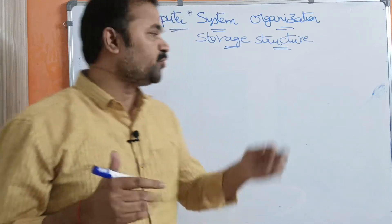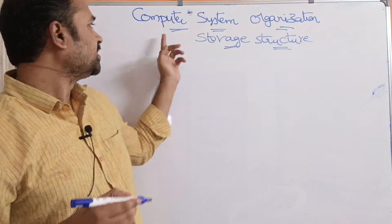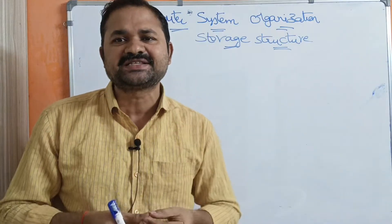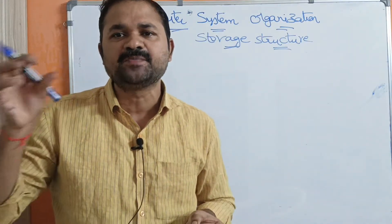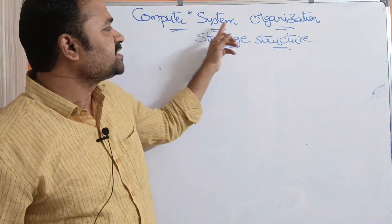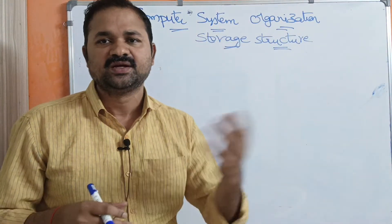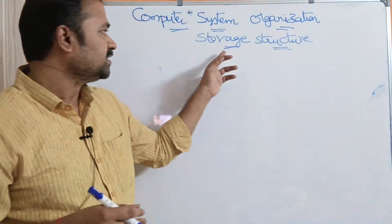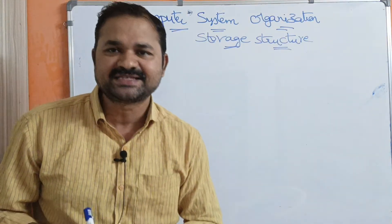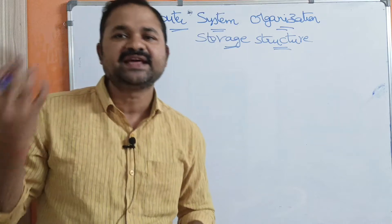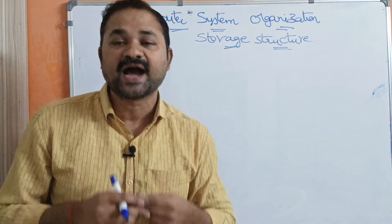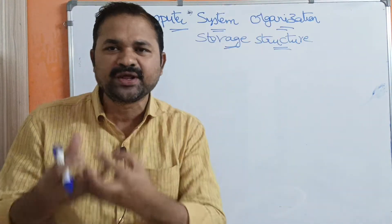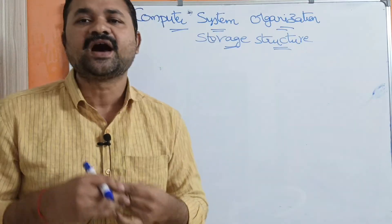Let us discuss about storage structures in computer system organization. In the last class we have seen about computer system operation. We have three concepts in computer system organization: the first one is computer system operation, the second topic is storage structures, and in the next video we will see the third topic, which is I/O structures. Storage structures are useful for storing information and data.